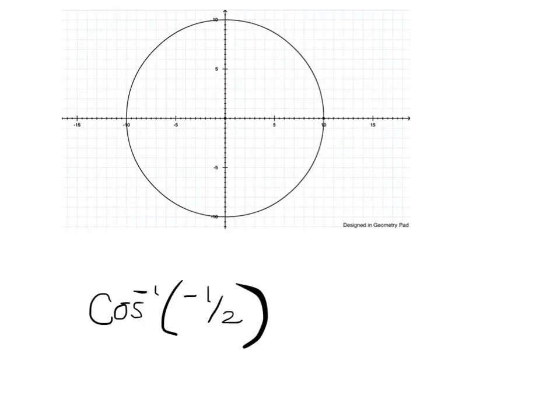So cosine is what on the unit circle? It's the x value. So if I'm doing the inverse cosine of negative 1 half, I need to find places that have x coordinate negative 1 half. Where does that happen? It would be at, even just on the picture, x is negative 1 half. It happens right here.